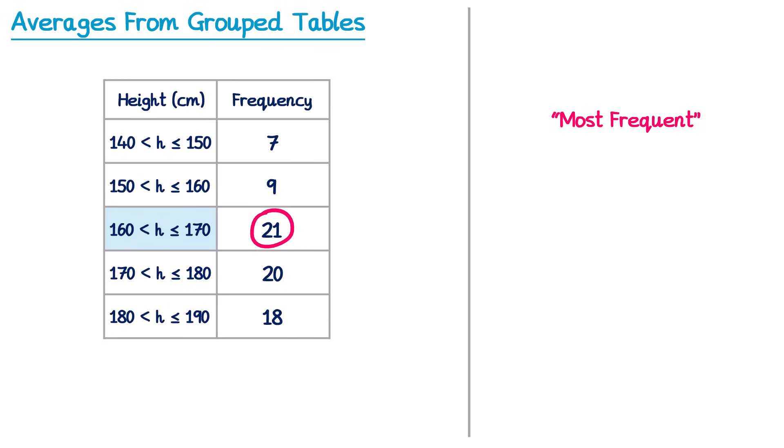So for this reason we can't find the actual mode. Instead we say we're going to find the modal class. This is the class interval that has the highest frequency. So the interval that has the highest frequency is this one here, so we would just write down 160 is less than H is less than or equal to 170. So it's as simple as find the highest frequency and write down the interval that goes with it.